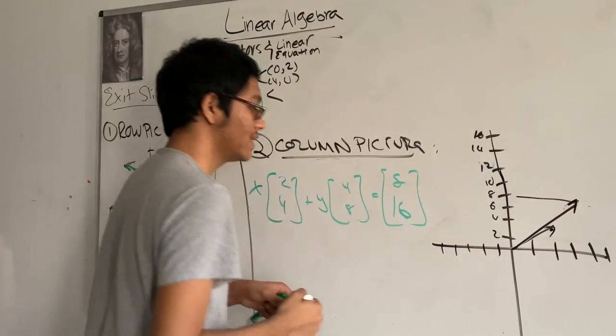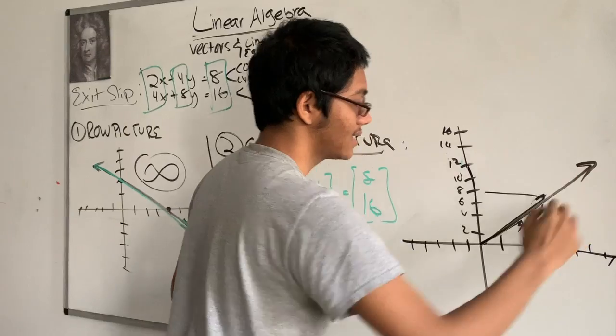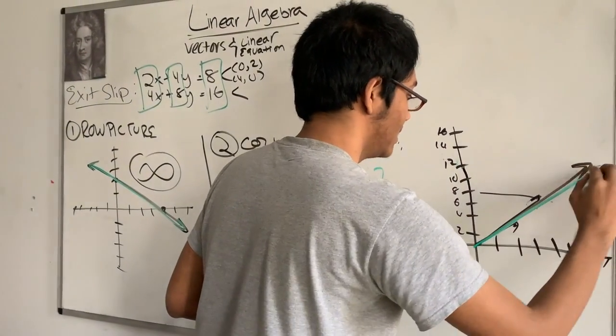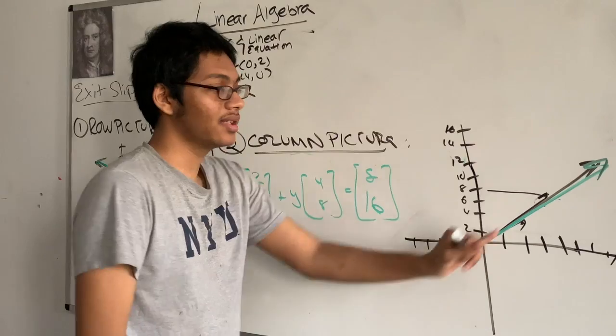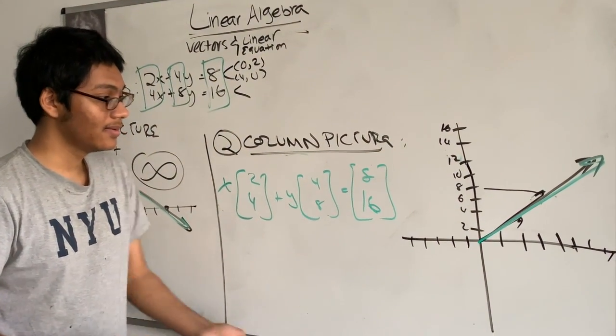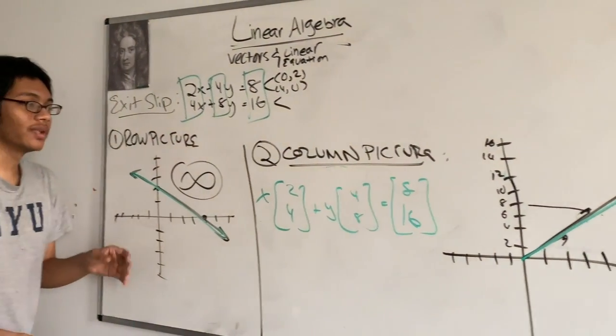Now, you probably already see what the problem is. If I go out 8 in this direction, it'll be the same vector. You see that all my vectors are really scaled versions of each other. They all lie on the same vector. So you can see there's an infinite number of solutions, both in the column picture and the row picture.